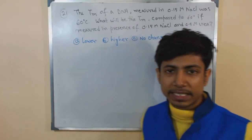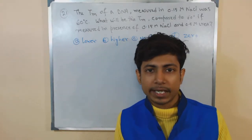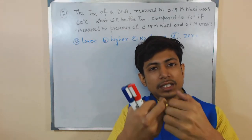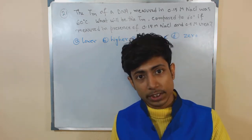The Tm or melting temperature means the temperature at which half of the DNA separated from the complementary strand. That is the temperature called melting temperature.